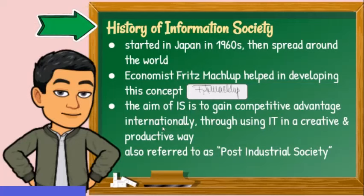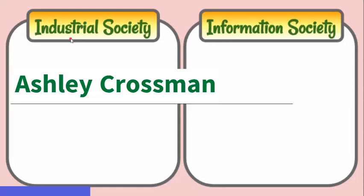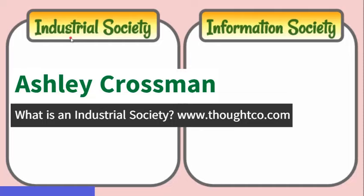According to Ashley Crossman in her article entitled 'What is an Industrial Society?' at www.thoughtco.com, an industrial society is one in which technologies of mass production are used to make vast amounts of goods in factories, and in which this is the dominant mode of production and organizer of social life.